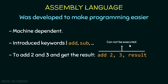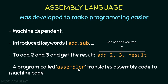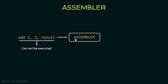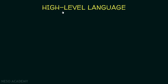This assembly instruction cannot be executed directly because all instructions must be in machine code before they can execute. There is a program called an assembler that translates assembly code to machine code. The assembly code is given to the assembler, the assembler translates it to machine code, and then that machine code can be executed. Whenever we write a program using assembly, we translate it to machine code using the assembler and then execute it.